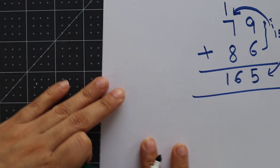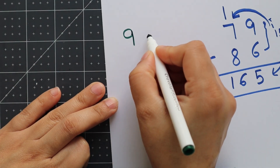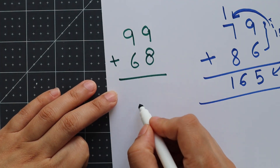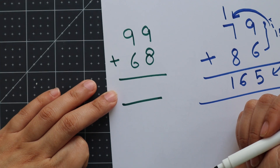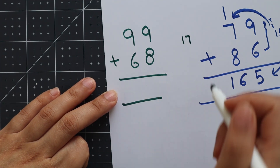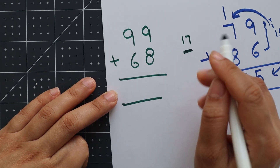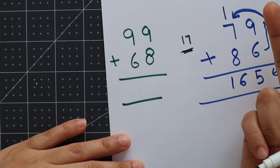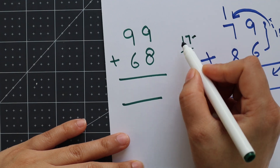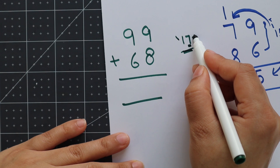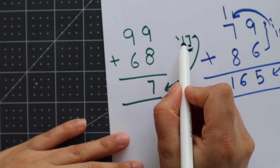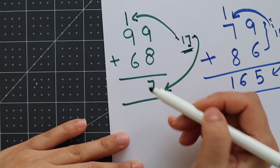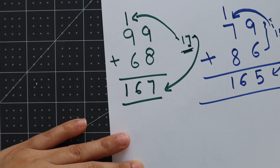Let's take another example — we have 99 plus 68. We add the ones place: 9 plus 8 is 17. When you solve this, you can write the result here so you can see it easily. Again, 17 is a two-digit number — the ones digit 7 comes here at the ones place, and the 1 carries forward to the tens column. Then 1 plus 9 is 10, and 10 plus 6 is 16. So the tens column gives us 16.